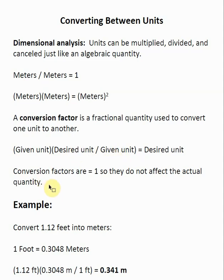One thing to remember is that conversion factors are really just multiplying by one, so they don't affect the actual quantity. For example, 100 centimeters is equal to a meter — those are two different units, but two different ways of saying the same thing. The distance is exactly the same, so converting from one unit to another really doesn't change the actual quantity.